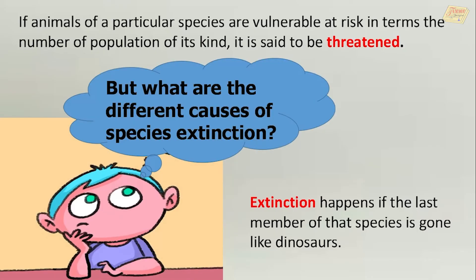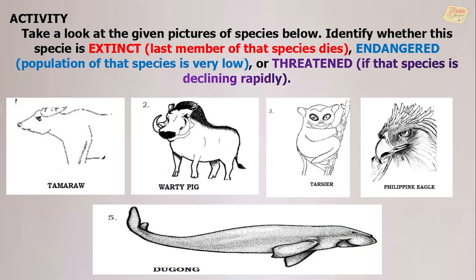But what are the different causes of species extinction? Before we proceed, let us have first an activity. Take a look at the given picture of species below. Identify whether each species is extinct, endangered, or threatened.